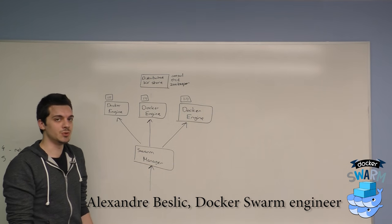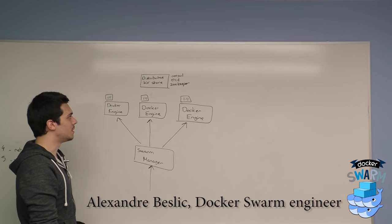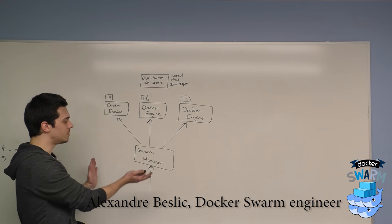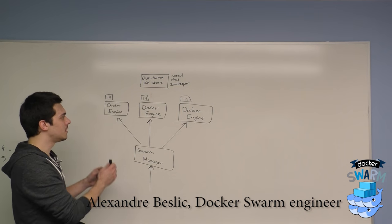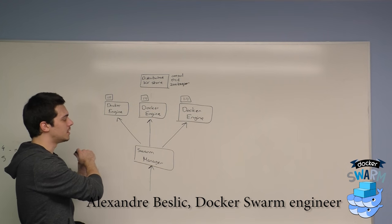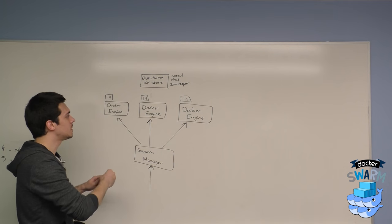So on a single Docker engine you would use links, but what you can do on the Swarm cluster is spanning a network that will scatter across your engines.